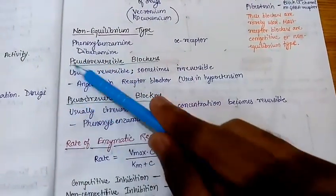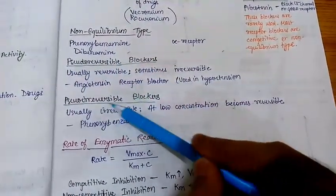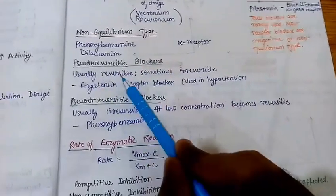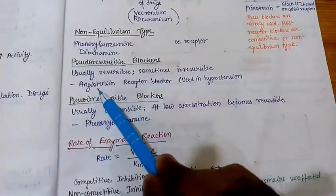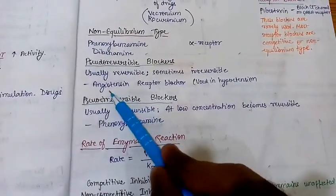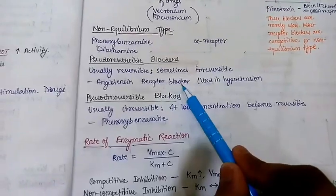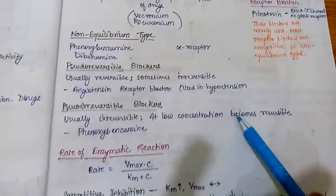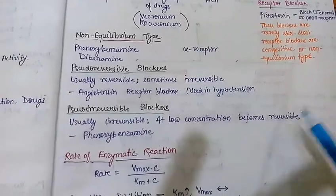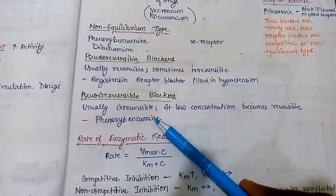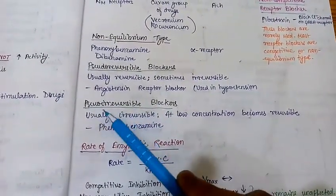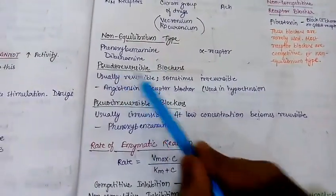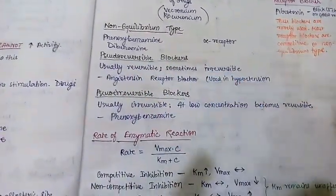There are two more blocker types: pseudo-reversible blockers and pseudo-irreversible blockers. Pseudo-reversible blockers are usually reversible but sometimes become irreversible — an example is endothelin receptor blockers. Pseudo-irreversible blockers are usually irreversible but at low concentration they become reversible — example is phenoxybenzamine. So pseudo-irreversible is usually irreversible but at low concentration can become reversible; pseudo-reversible is actually reversible and sometimes becomes irreversible.